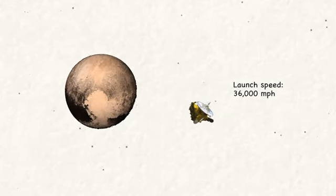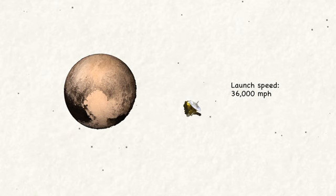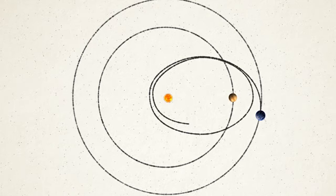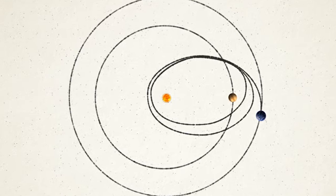Since Parker Solar Probe plans to fly past the Sun, it doesn't need to cancel out all of Earth's sideways speed, but it does need to remove 53,000 miles per hour of it.